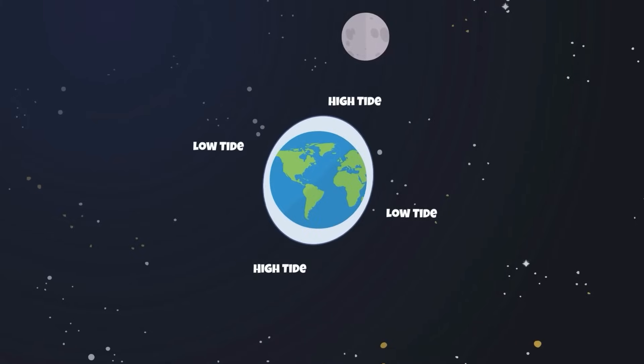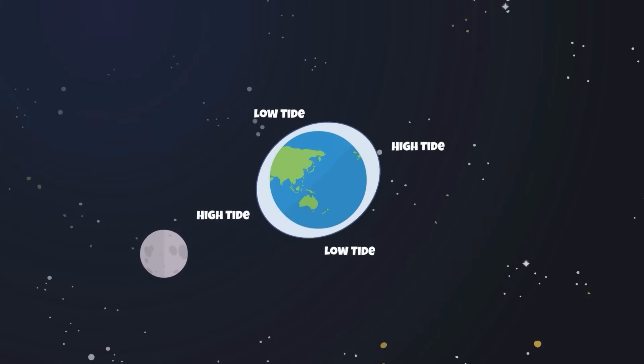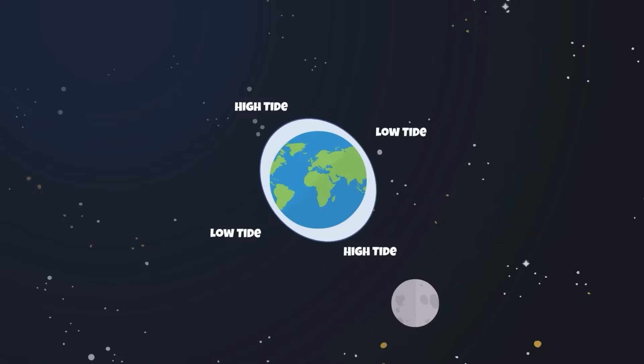As the Earth rotates, there are patterns in high and low tides throughout the day. These patterns can also be seen during a lunar cycle.